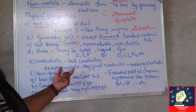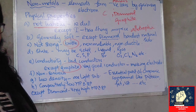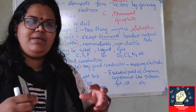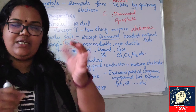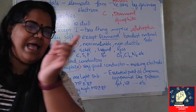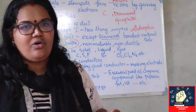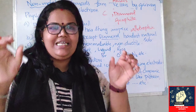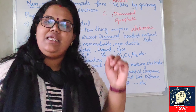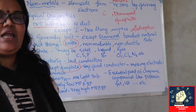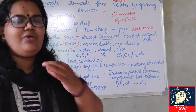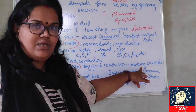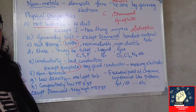Now, what about conductivity? Nonmetals are very poor conductors of heat and electricity. But there is a very important exception — graphite, another allotropic form of carbon. You may have seen the cells we put in a remote — if you open one, you will see a black rod inside called an electrode, which is made of graphite. Graphite is used for making electrodes because it is a very good conductor of electricity.